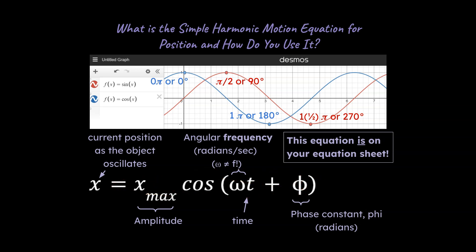This equation is on your equation sheet for AP Physics C mechanics students. I do want to point out a couple things. So our current position as the object oscillates at some value of time is going to be this x value. This x max is like our amplitude, the cosine. Now over here we've got omega. In this context we're going to call this angular frequency, not angular velocity. It's going to be angular frequency.